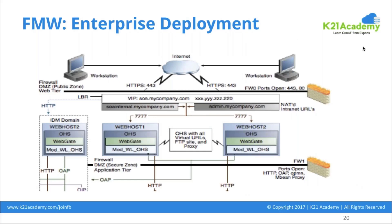Let's look at this — this is an Oracle enterprise deployment, which is what you will ultimately be building, or what companies build. On the top layer is a client tier, where end users have a workstation. Then you put a load balancer on top, and the load balancer names could be something like soa.mycompany, soa-internal, or admin.mycompany — various URLs depending on what you want to do.